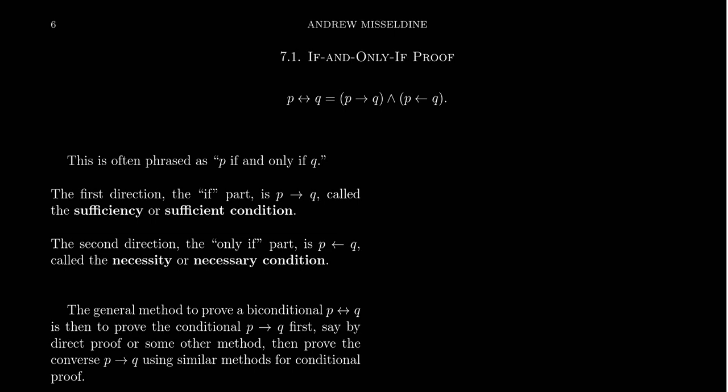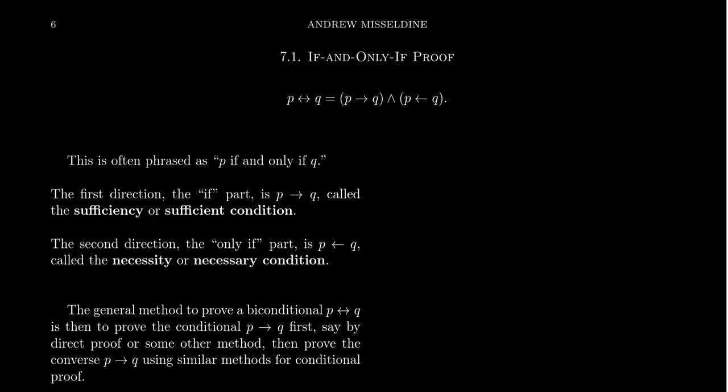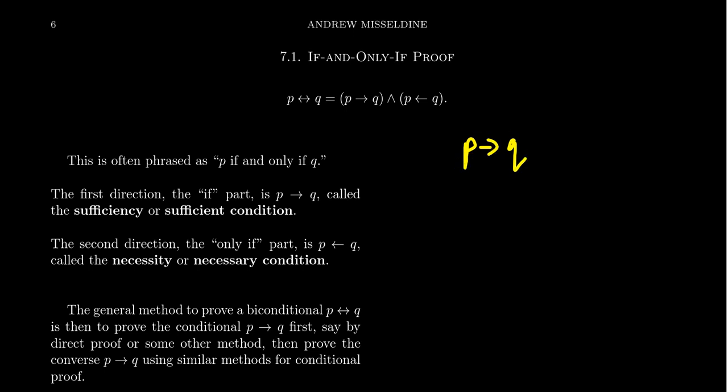In previous videos of this lecture series, we've talked a lot about proving conditional statements, things like P implies Q. We have the method of direct proof, where you assume the hypothesis and then derive the conclusion through logical inference. You can also prove this using indirect proof methods like contrapositives or proof by contradiction.